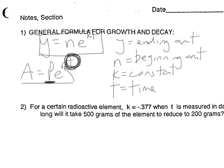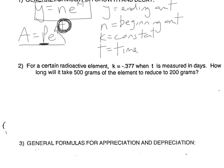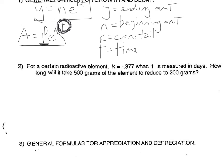If you look at the very first problem, it says T is measured in days. The problem says: for a certain radioactive element, K equals negative 0.377. We don't really need to know what that means, but since K is negative, that means it's decreasing. It says T is measured in days. How long will it take 500 grams of the element to reduce to 200 grams? So we know we're starting with 500, ending with 200, we know K, and we're looking for T — how many days for that to happen.